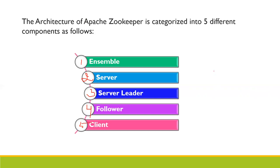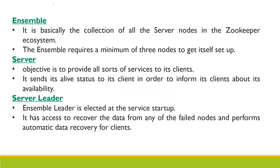The first is ensemble — basically the collection of all the server nodes in the Zookeeper ecosystem. The ensemble requires a minimum of three nodes to function. The server provides all sorts of services to its clients and sends status to clients to inform them about availability.